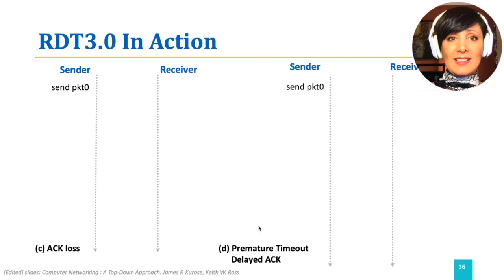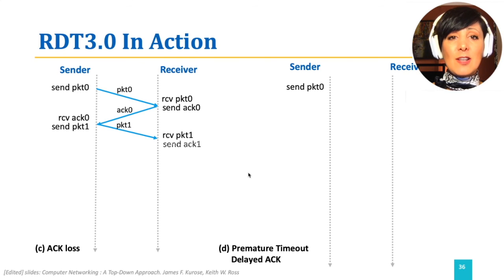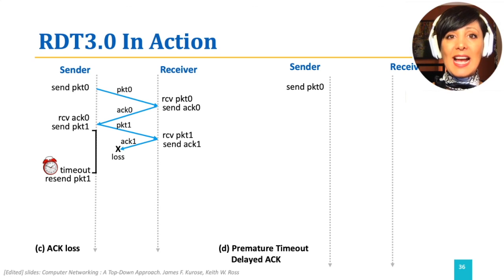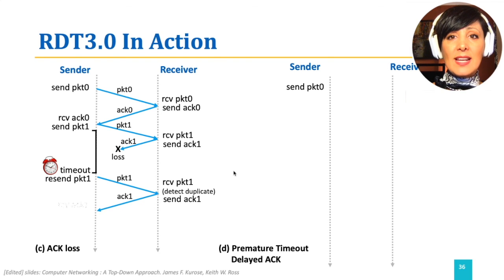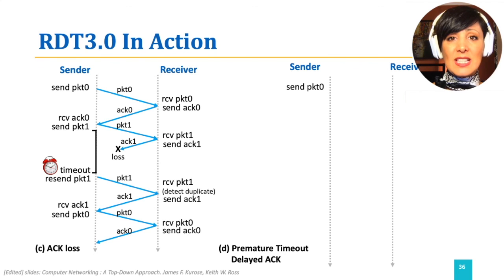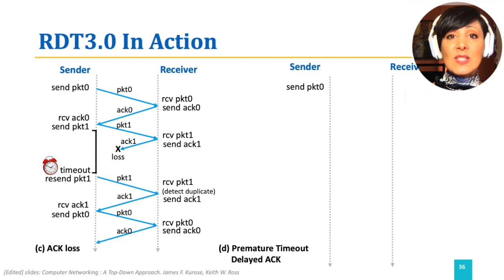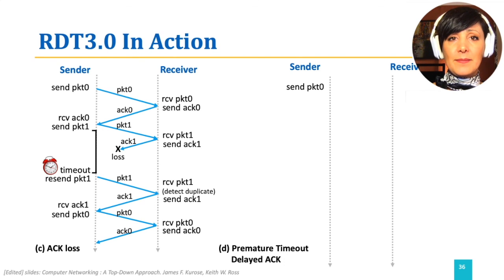What if an ACK packet is lost? Loss of an acknowledgement will have the same effect as loss of a packet at the sender side, which is the timeout and resending the packet when the timeout happens. At the receiver side, the story is different though. The receiver that has already received and acknowledged packet 1 now receives a duplicate packet 1. It has to send another acknowledgement for this packet without extracting its data and delivering it to the upper layer. After this, the same process will resume.